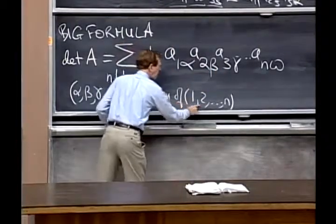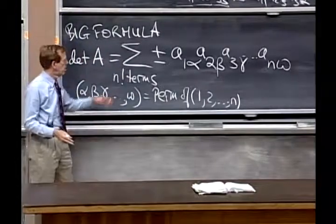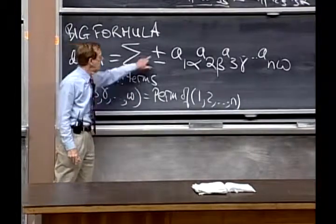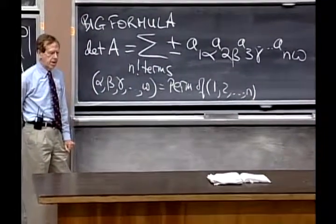It's only, the only time I'll get something is if it's A one one times A two two times A three three. Only the permutation that's in the right order will give me something. It'll come with a plus sign and the determinant of the identity is one.